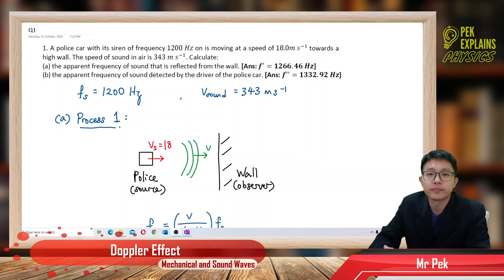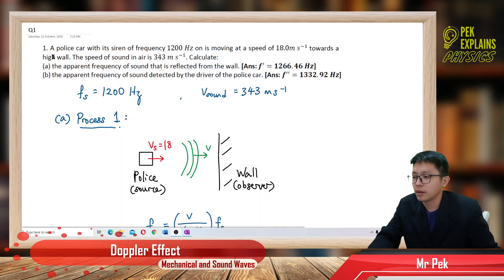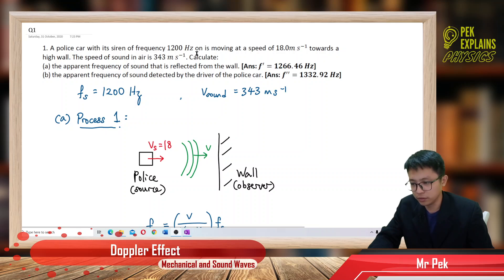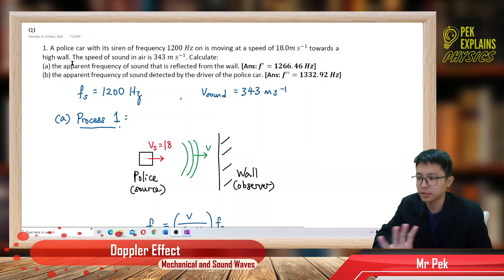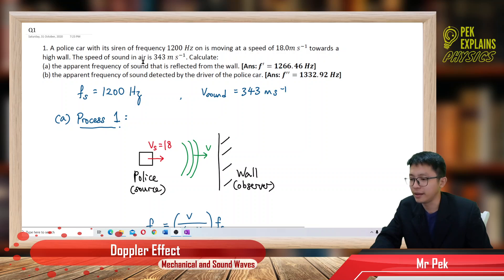Welcome back. This is a Doppler effect question. A police car with a siren of frequency 1200 Hertz is moving at a speed of 18 meters per second towards a high wall. The speed of sound in air is 343 meters per second.